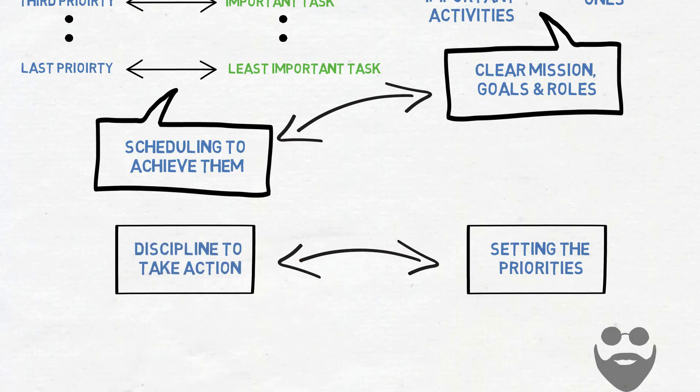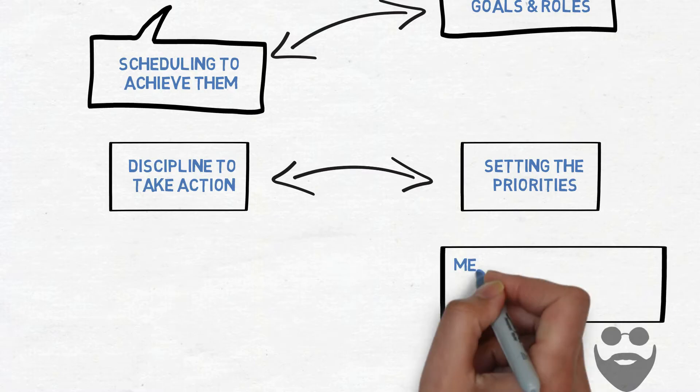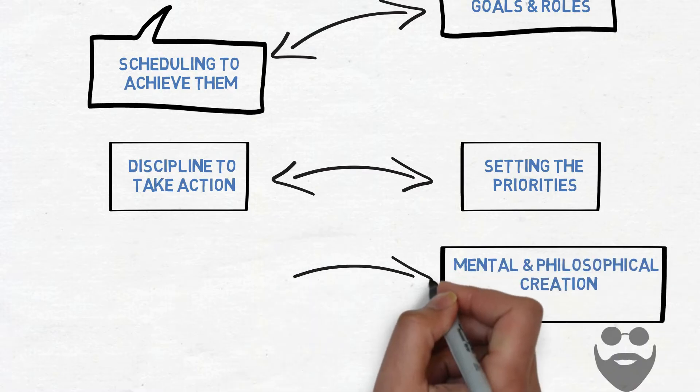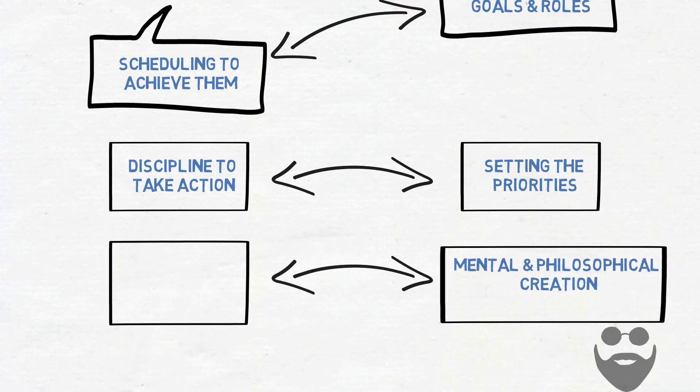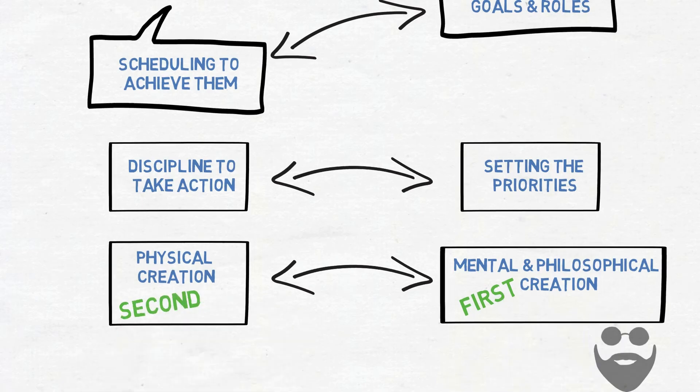Now, time is your servant, not your master. Habit two is a mental and philosophical creation, while habit three is the physical one. So all things are created twice, first in our mind, and then in our physical life.